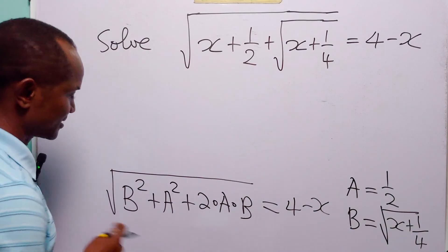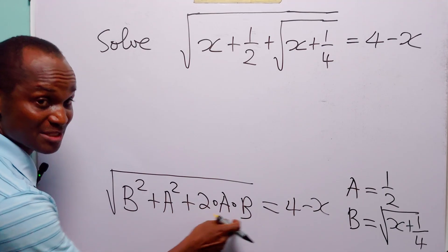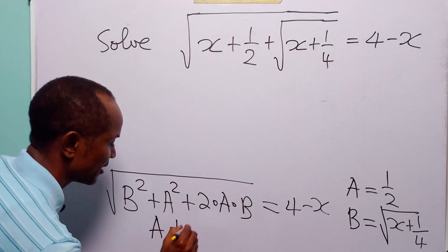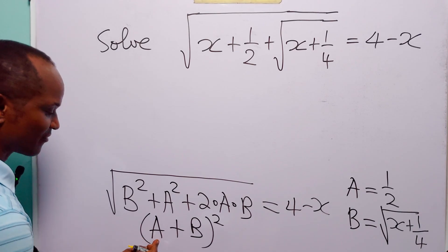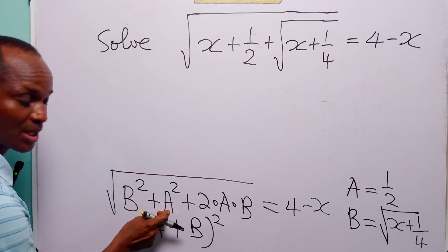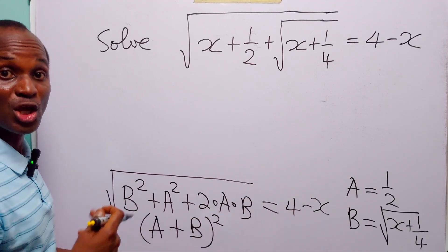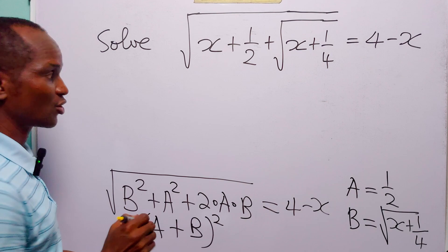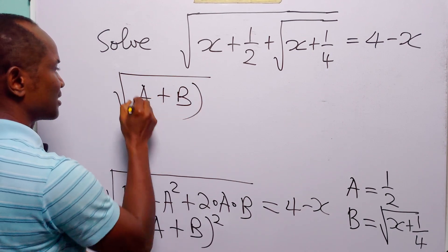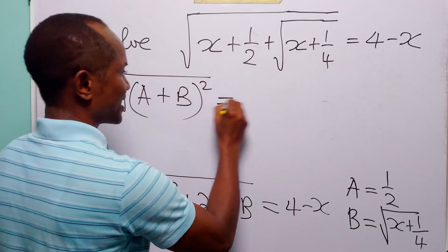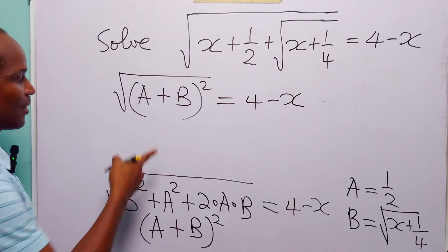But of course you know that a squared plus 2 times a times b plus b squared is equal to (a plus b) squared, because when we expand this bracket we have a squared plus b squared plus 2 times a times b. So that means that on the left-hand side of this equation we have the square root of (a plus b) squared.